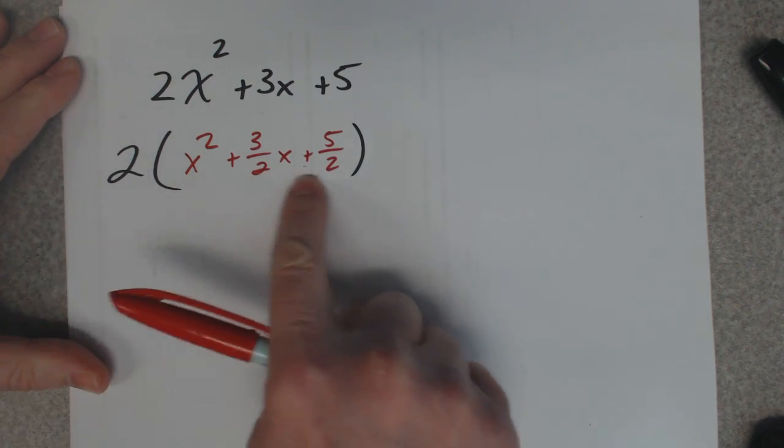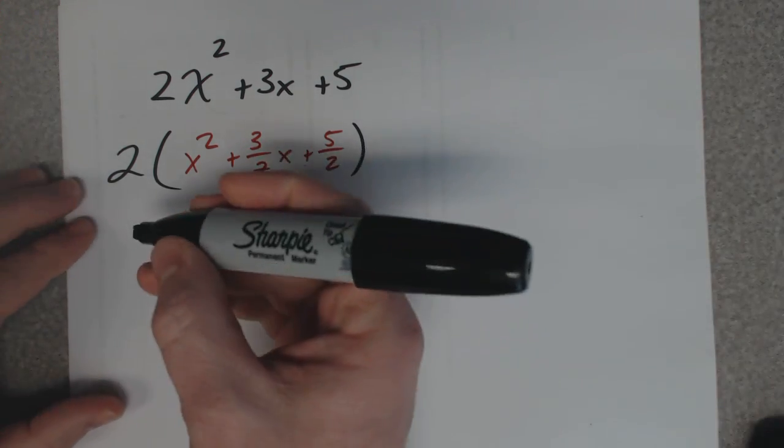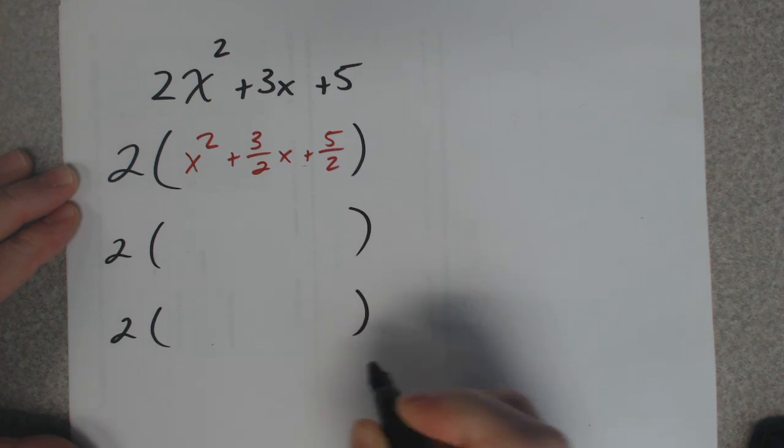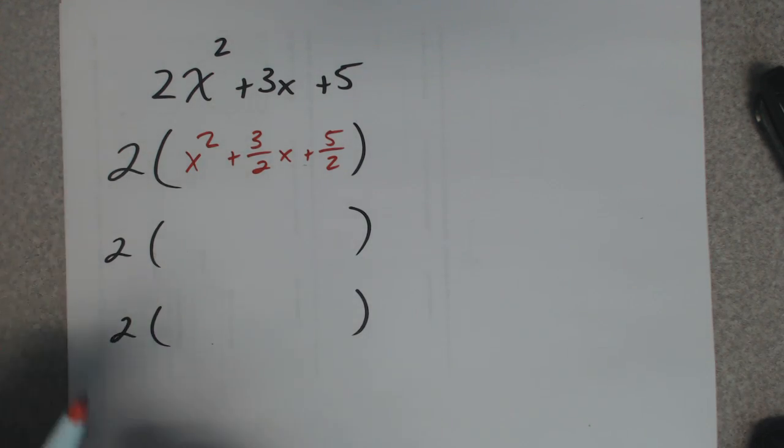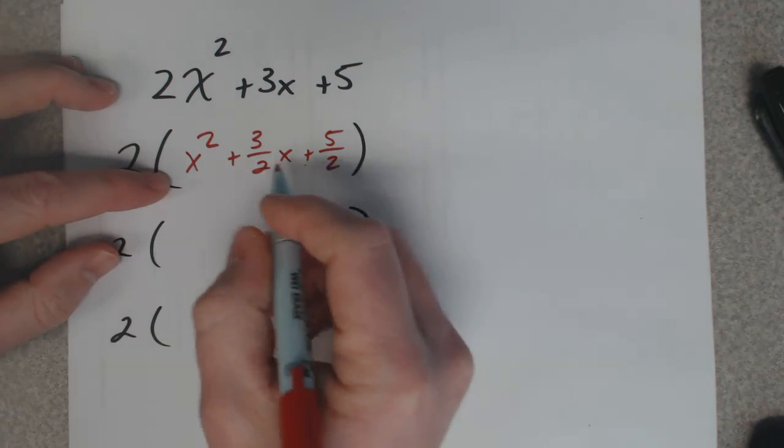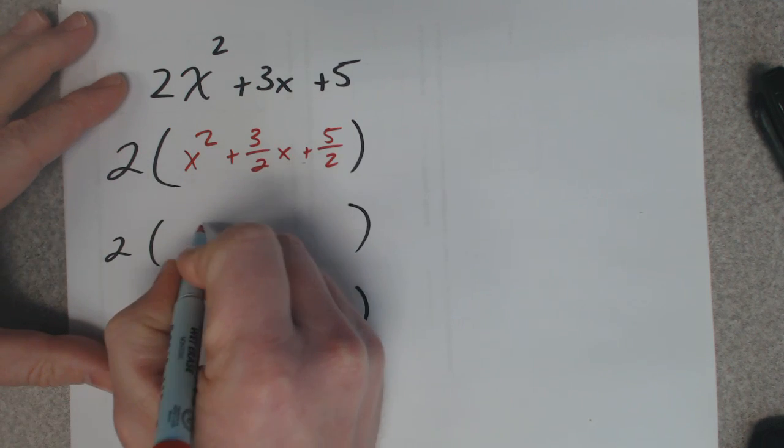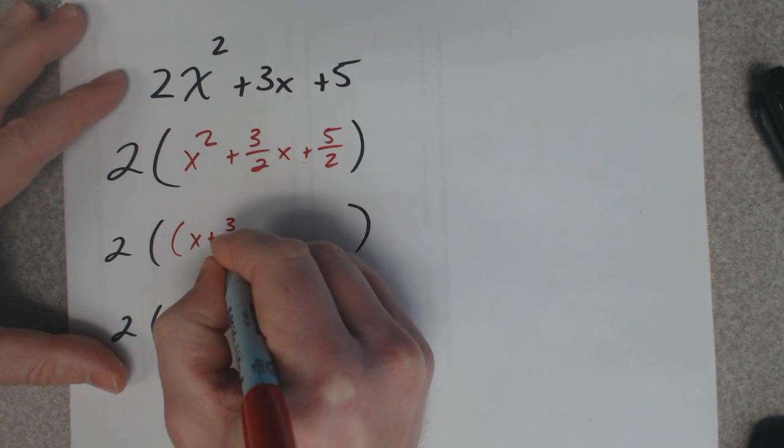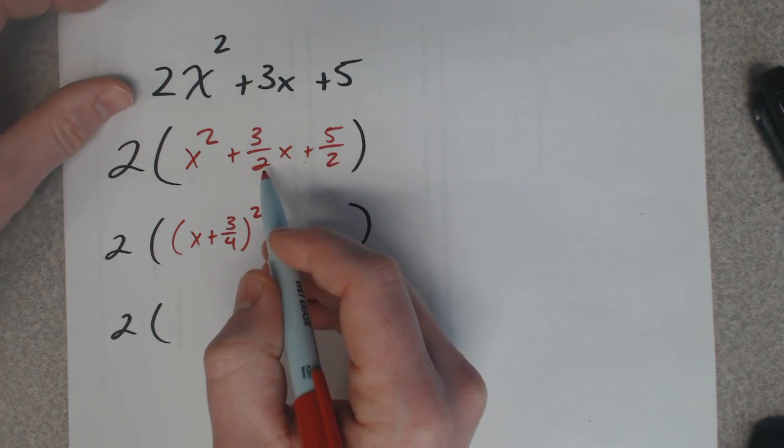Now you're going to work through this just like we did the other ones. Every time you do a step, you keep that 2 on the outside. Eventually we're going to distribute it through. Remember what you do: you take half of this value. So half of 3 halves is 3 fourths, so it'd be x plus 3 fourths squared.